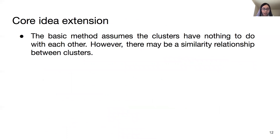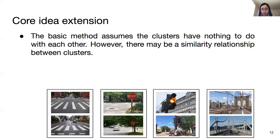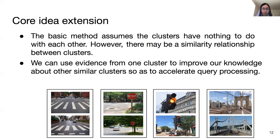This basic method can work, but it ignores a key fact: it assumes the clusters have nothing to do with each other. However, there may be a similarity relationship between clusters. Reviewing the previous illustrative example, we can find that group 2 is closer to group 1 than the others. We can use evidence from one cluster to improve our knowledge about other similar clusters, so as to accelerate query processing.